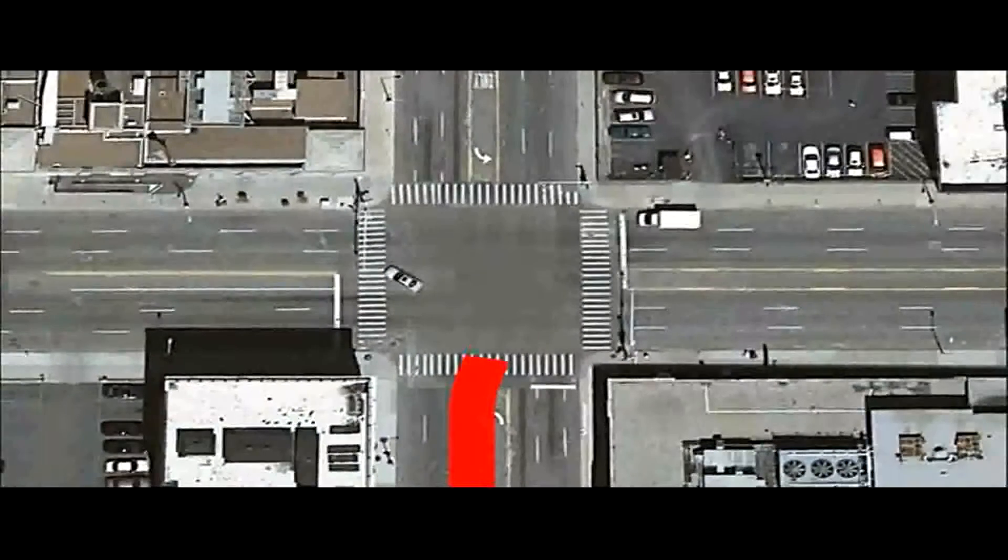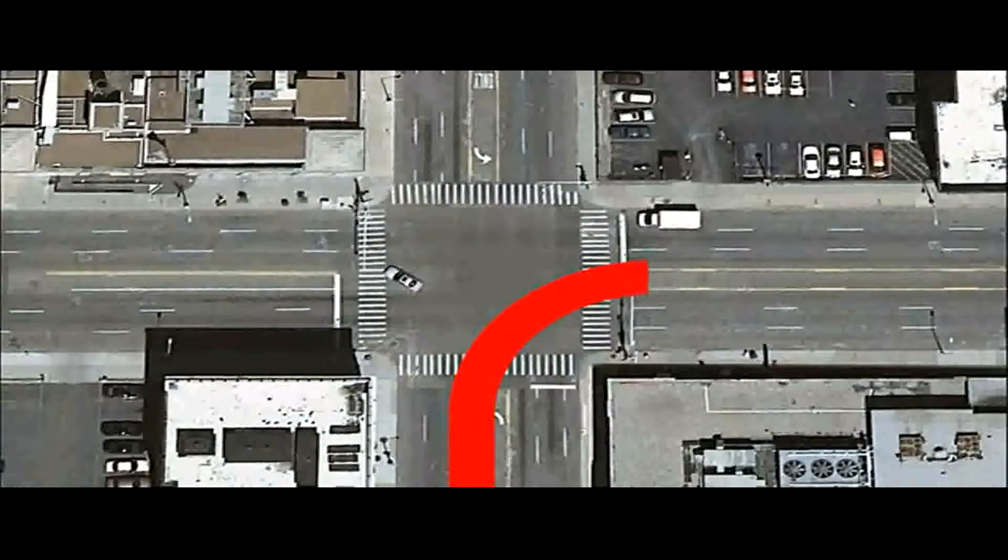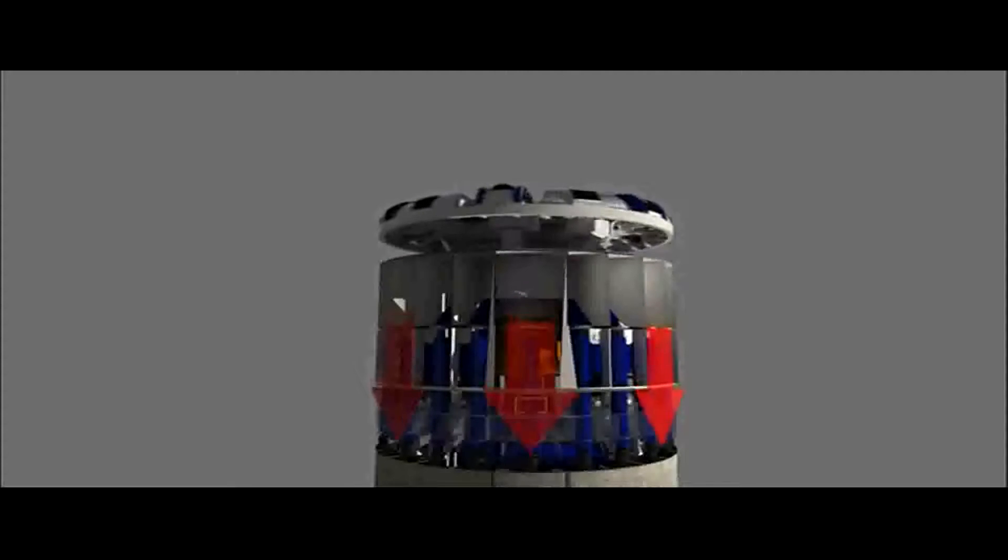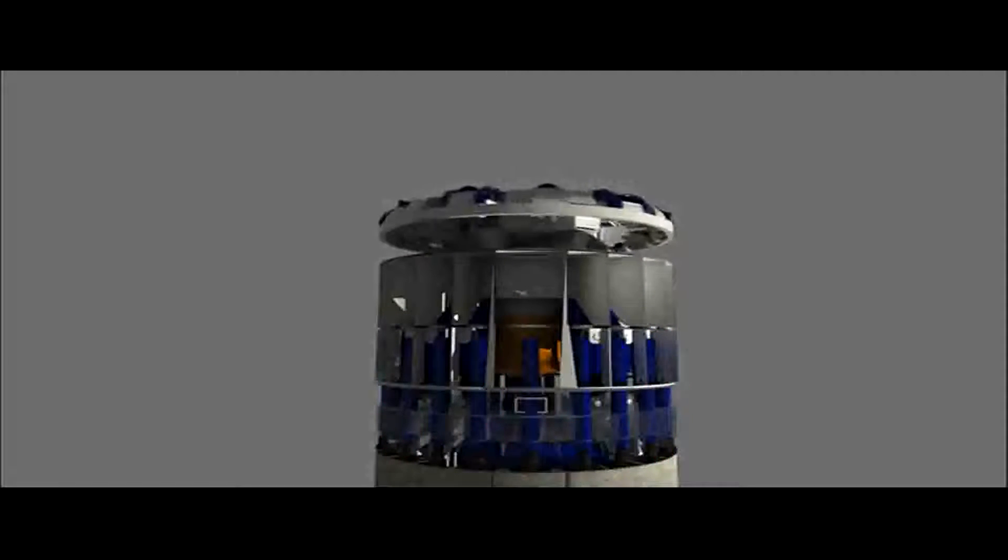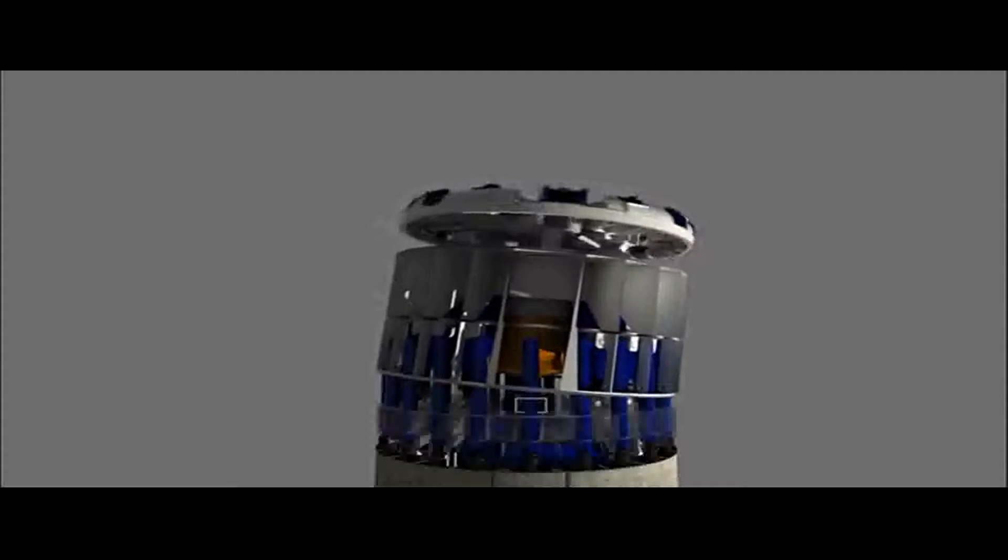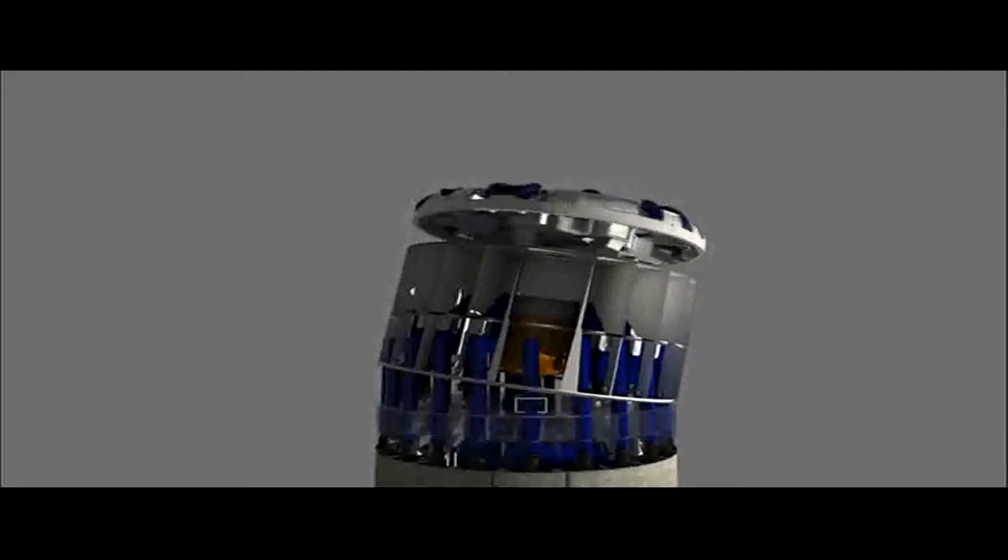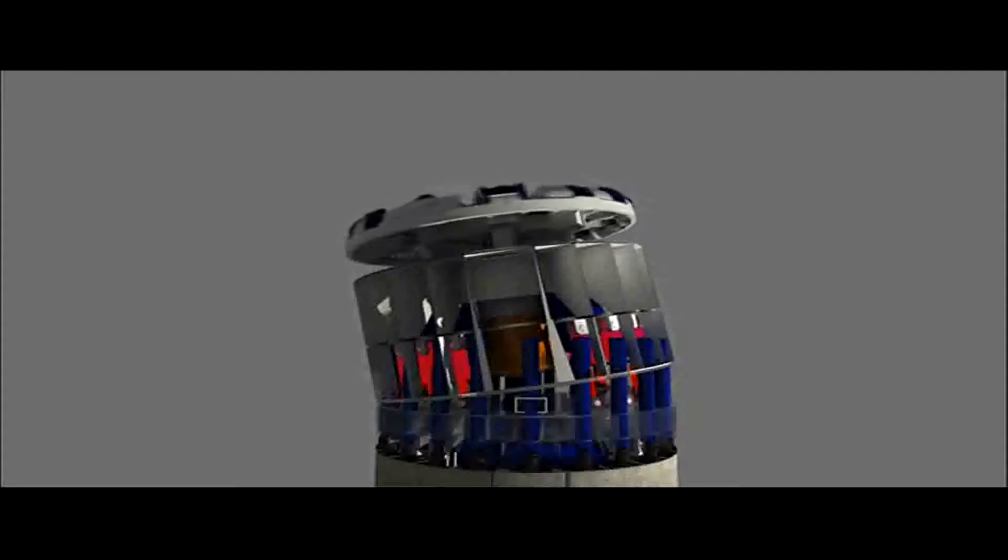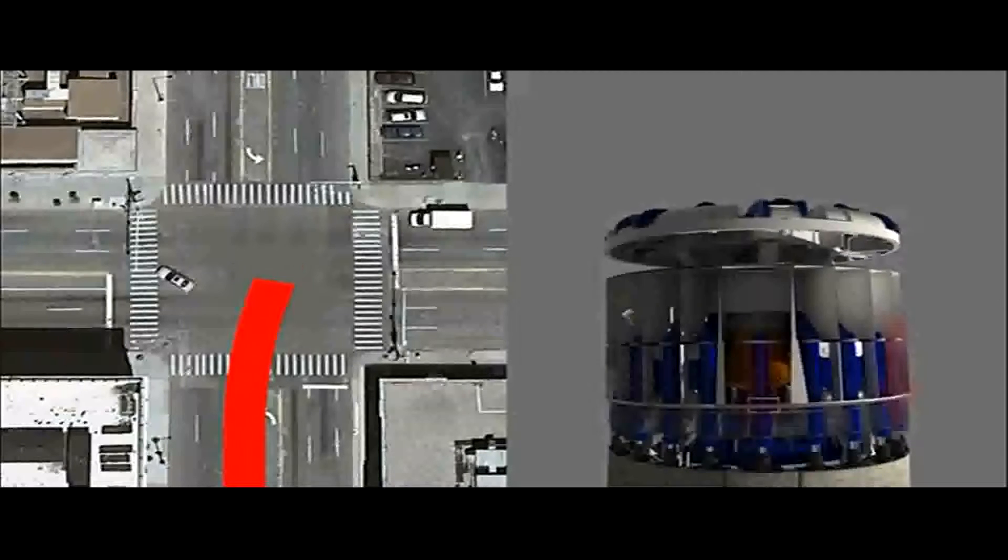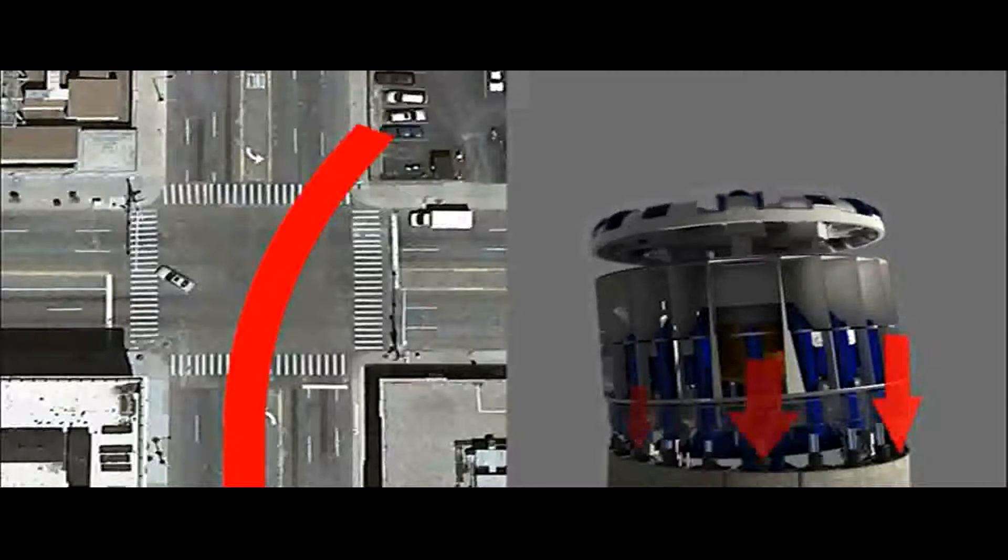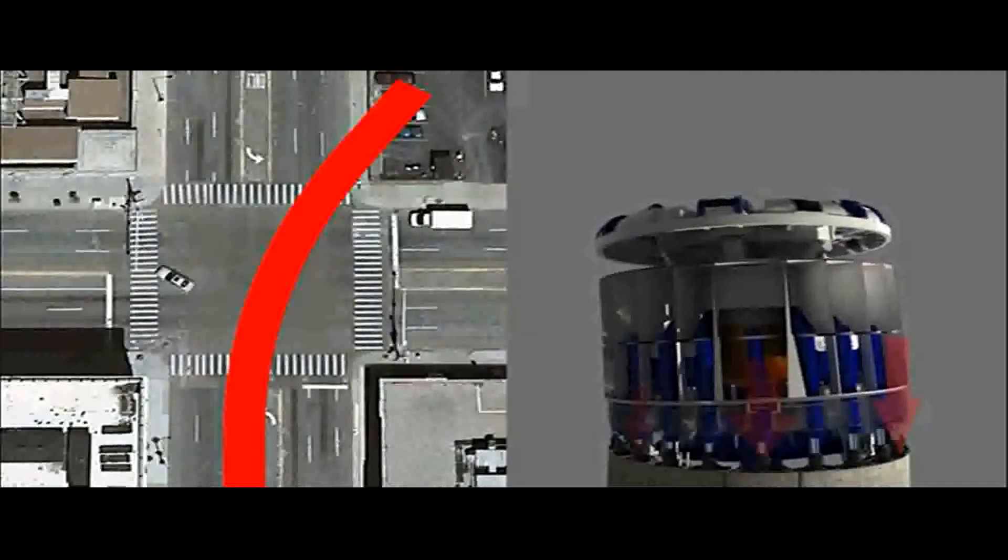Using a process called active articulation, Robbins' EPBs can produce tight curves with a radius as small as three to four times the tunnel diameter. Active articulation allows the thrust to be transferred equally to the entire circumference of the segment ring, eliminating the problem of ring deformation. The articulation occurs between the front section and rear section, which are connected by articulation cylinders. Other EPBs use a process called passive articulation, which places uneven pressure on the rings while steering and causes deformation of segment rings.